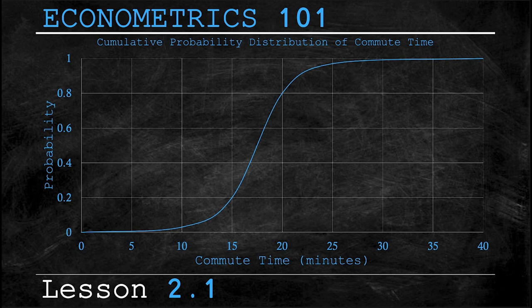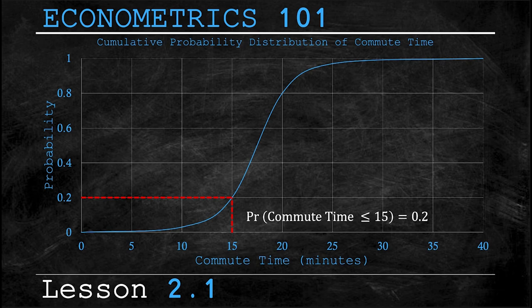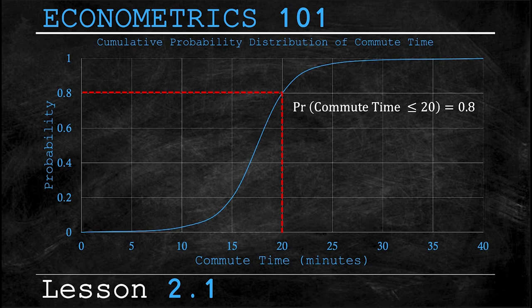Well we can tell from this cumulative distribution function or CDF that the probability your commute takes 15 minutes or less is 0.2 or 20 percent. We can also tell from the CDF that the probability that your commute takes 20 minutes or less is 80 percent. You might be wondering how we made this CDF and if you are don't worry we'll be showing you how to create these types of CDFs, histograms, and more in RStudio later in the series.